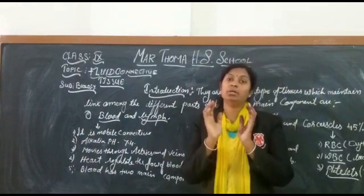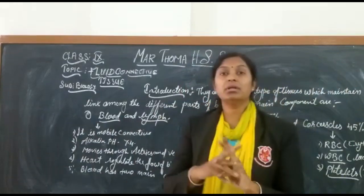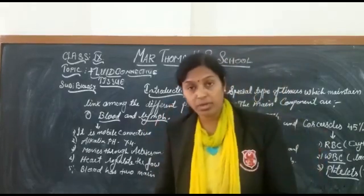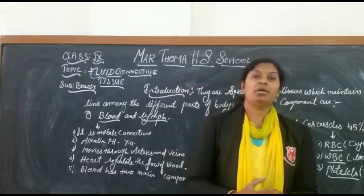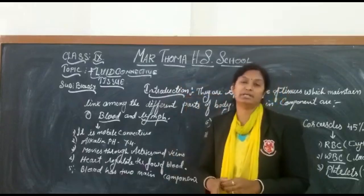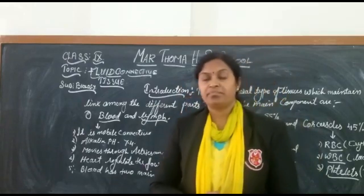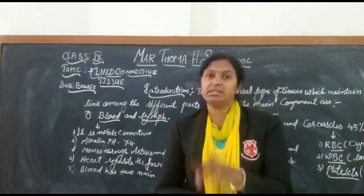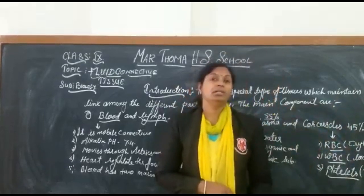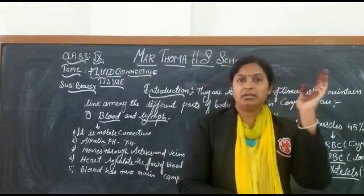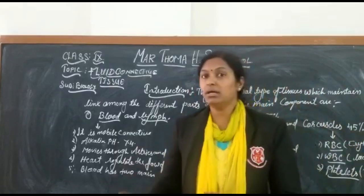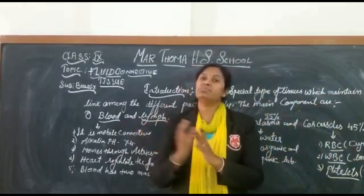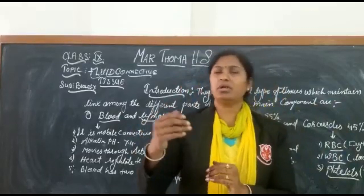Regarding the cellular structure of WBC: they may be amoeboid in shape, or they may be rounded. Most importantly, WBCs contain a nucleus — they are nucleated cells. This is the main difference between WBC and RBC: WBC contains a nucleus but RBC does not. A second difference is that RBC are red in color but WBC are colorless. The lifespan of RBC is 120 days, but the lifespan of WBC is only a few hours to one or two days.